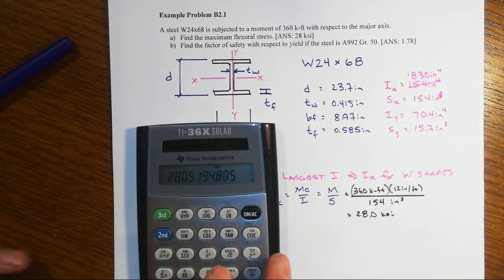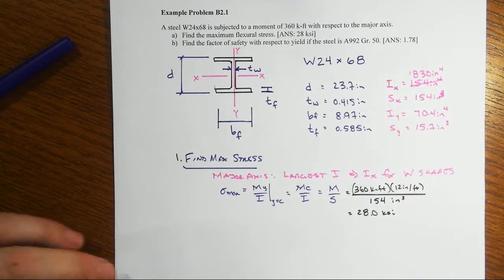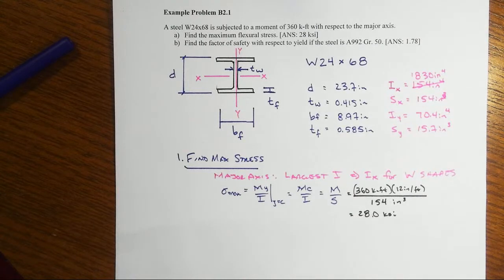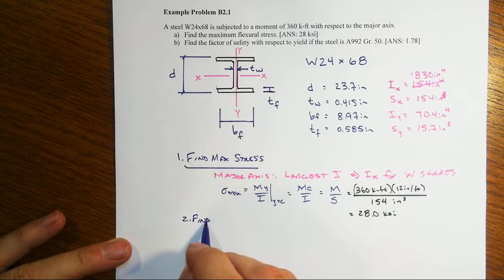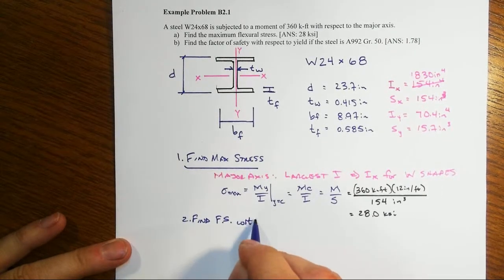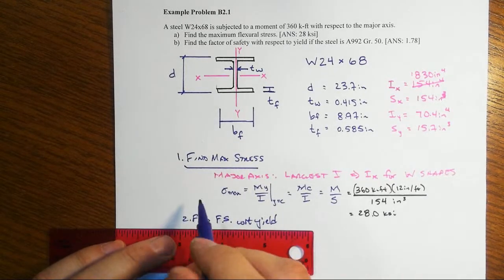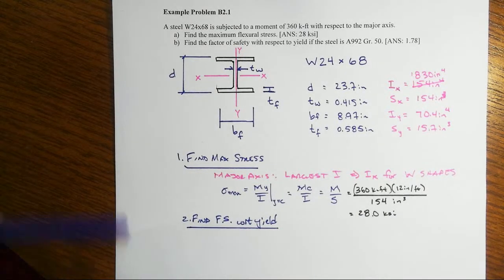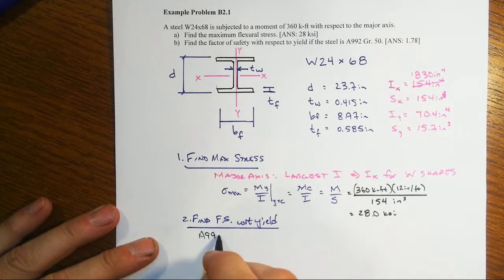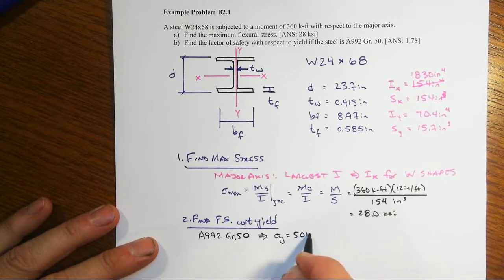That 28 KSI would be either compression or tension depending on whether we're at the top or the bottom, but it's the same overall maximum stress. We're also asked to find the factor of safety with respect to yield if the steel is A992 Grade 50. The yield stress for A992 Grade 50 turns out to be 50 KSI.